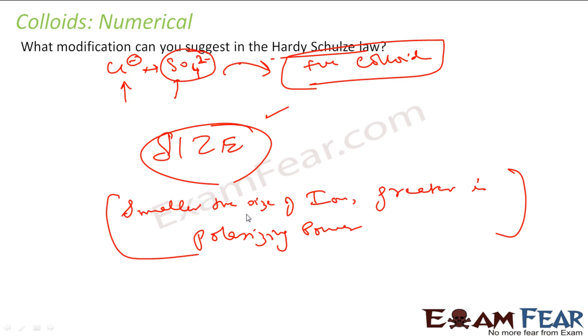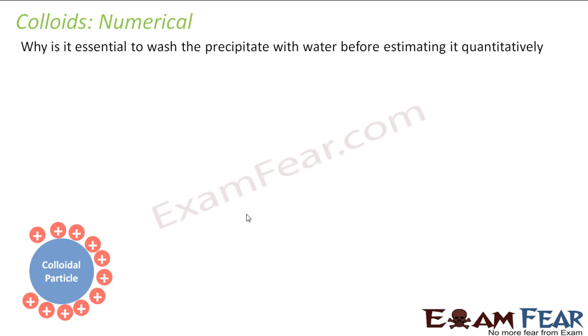Because the polarizing power has the ability to affect both these factors - the charge and the size - greater is the precipitation. The next question is: why is it essential to wash the precipitate with water before estimating it quantitatively?